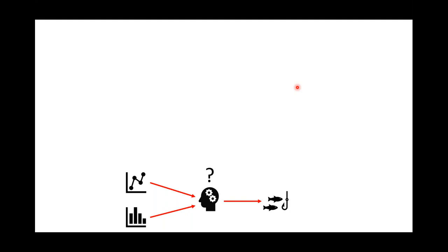Basically what stock assessment scientists do is they take several pieces of information and then try to put those together to provide advice on managing the stocks. It's really up to the stock assessment scientists to decide how to put those pieces of information together, and the decisions and assumptions they make can be very subjective. What we probably really want is something a little bit more objective, a little bit more automated — like a computer or a robot — to try and do this for us.